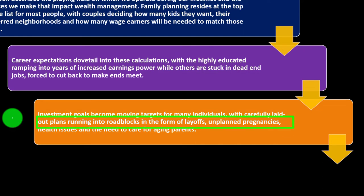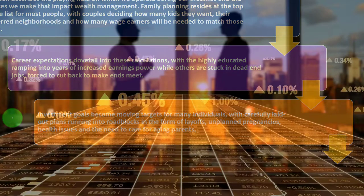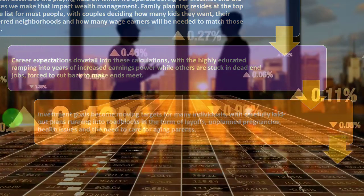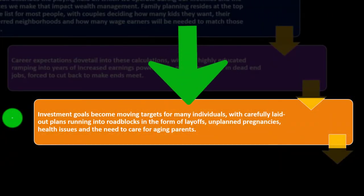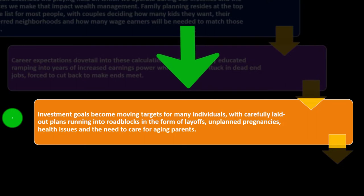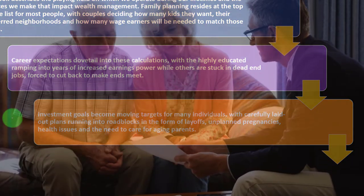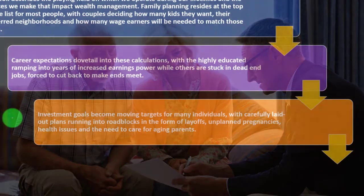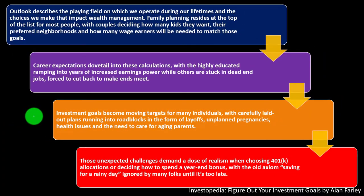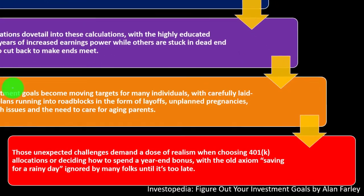Investment goals become moving targets for many individuals, with carefully laid out plans running into roadblocks in the form of layoffs, unplanned pregnancies, health issues, and the need to care for aging parents. When life happens and circumstances derail us, we want to try to get a goal back in place and possibly set up plans that are more encompassing so some of these life events won't completely throw us off the rails.